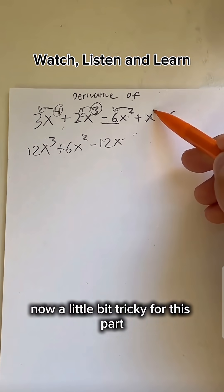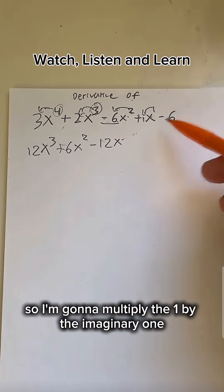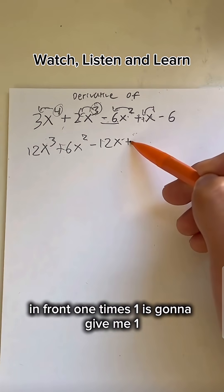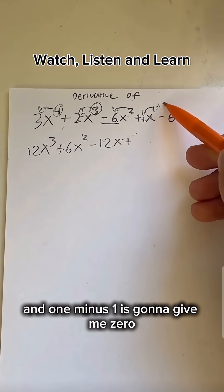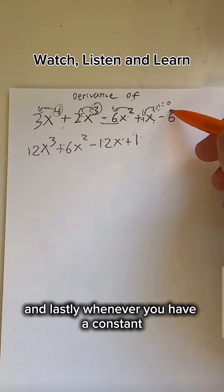Now, a little bit tricky for this part, but basically, there's an imaginary 1. So I'm going to multiply the 1 by the imaginary 1 in front. 1 times 1 is going to give me 1, and 1 minus 1 is going to give me 0, so an exponent of nothing. So it's just plus 1, 1 times 1.